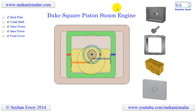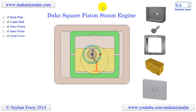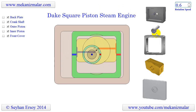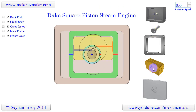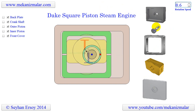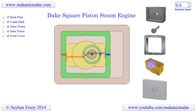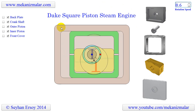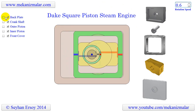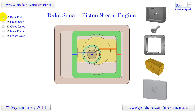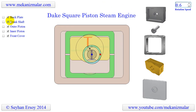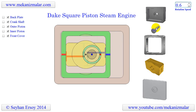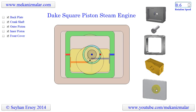The Dake engine is a square piston engine. There are basically 5 main parts in its construction with only 3 moving parts. The square outer piston is shown in green, the somewhat round inner piston is shown in gold, and the crankshaft is in grey. The other 2 major components are the engine body and cover plate.